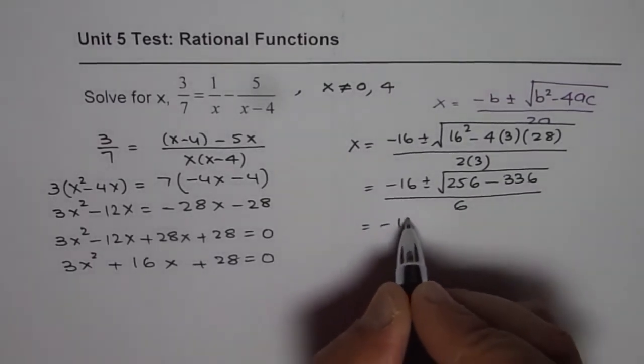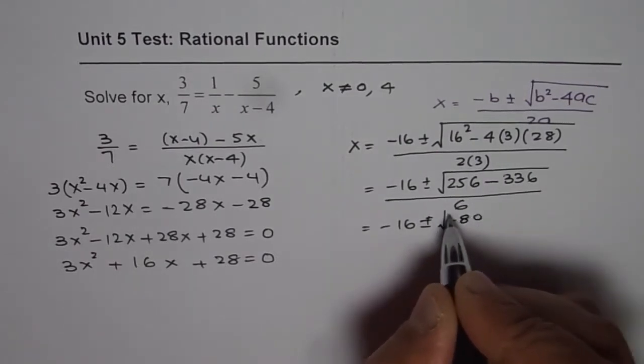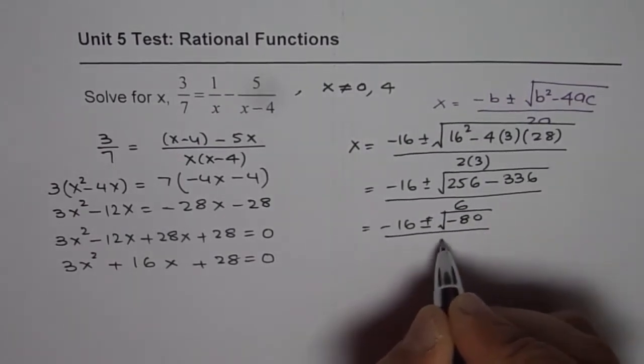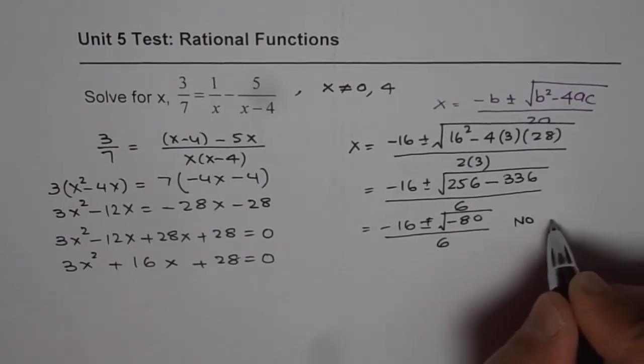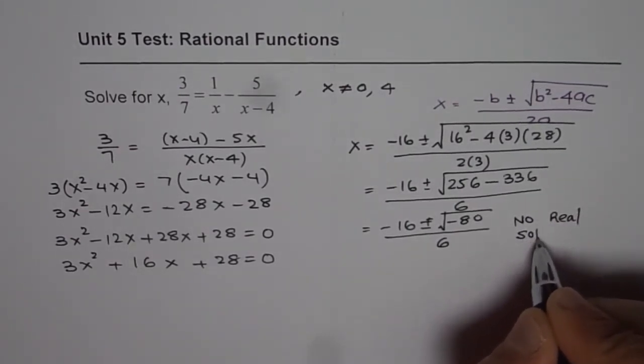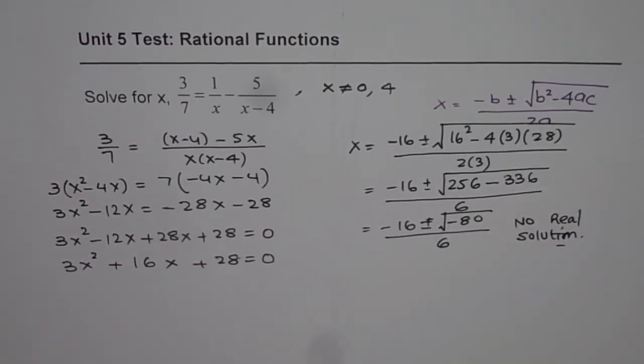So we get minus 16 plus minus square root of negative 80 divided by 6. Now that is not real. So we have no real solution for this rational function.